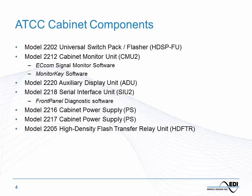Here's a quick list of the ATC cabinet components we'll cover in this webinar. The model 2202 is the universal switch pack flasher unit — the load switch and flasher are now the same interchangeable device. We have the model 2212 cabinet monitor unit, the auxiliary display unit as its modular display, the 2218 serial interface unit providing the BIU function, two power supply formats — the 2216 and 2217 — and finally the model 2205 high density flash transfer relay.